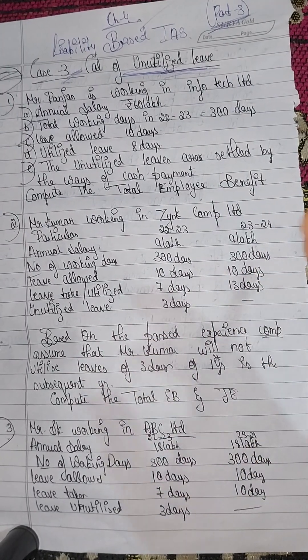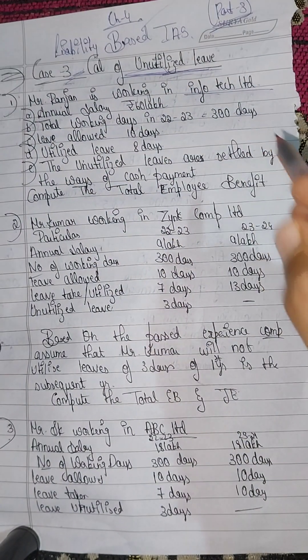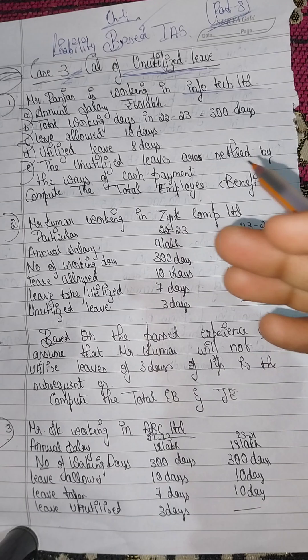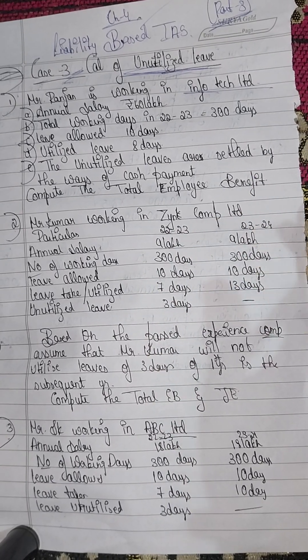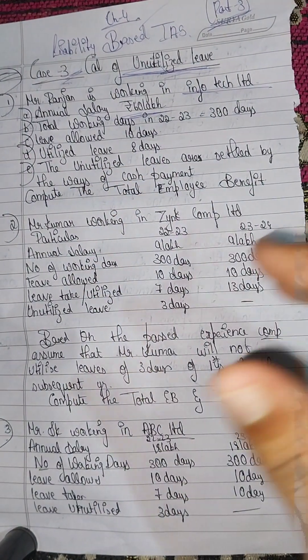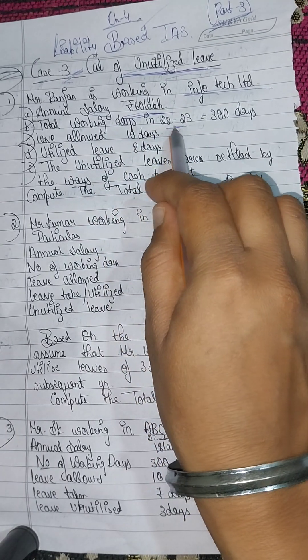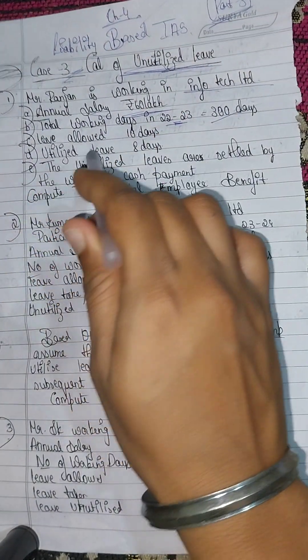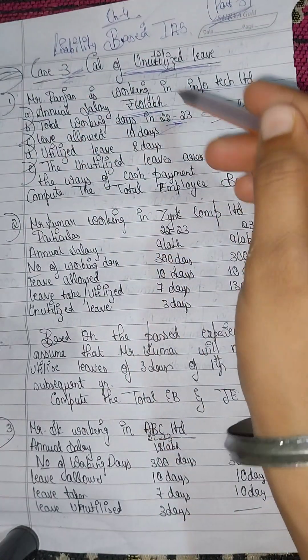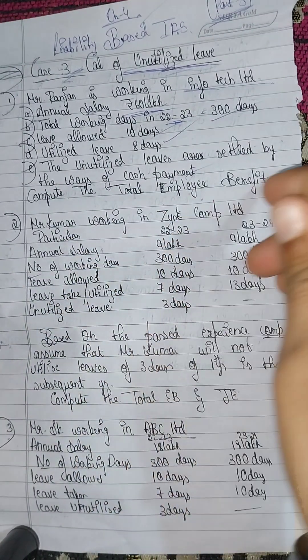Let's solve the first problem. Mr. Rajan is working in Infotech Limited. He has an annual salary of 60 lakh rupees. The total number of working days in 2022-23 is 300 days. Leave allotted is 10 days, leave utilized is 8 days, and the unutilized leaves are settled by way of cash payment. Compute the total employee benefit.